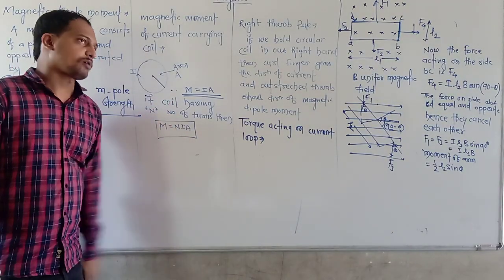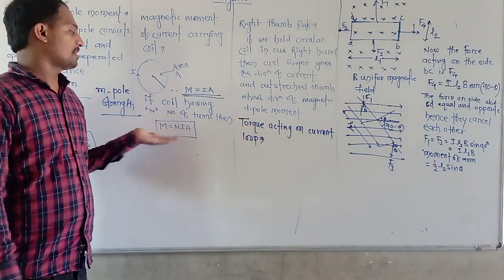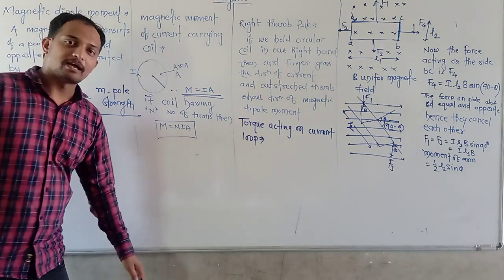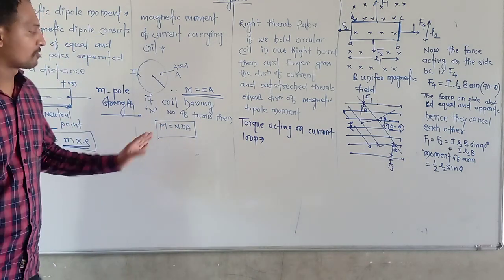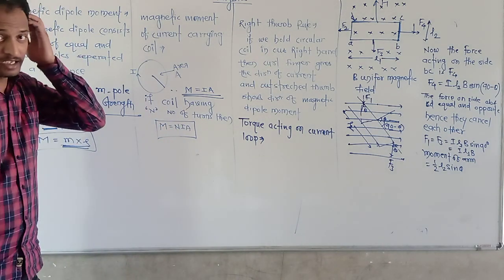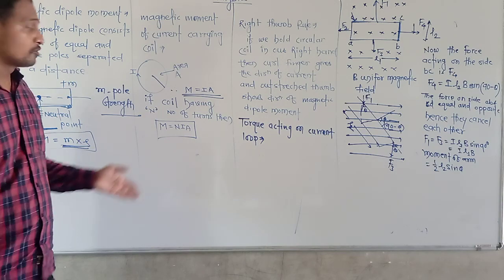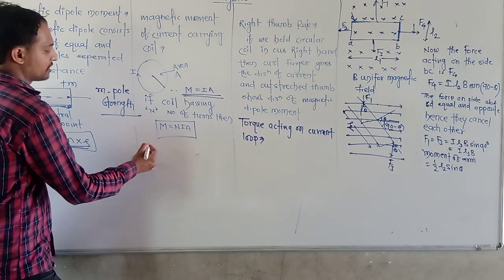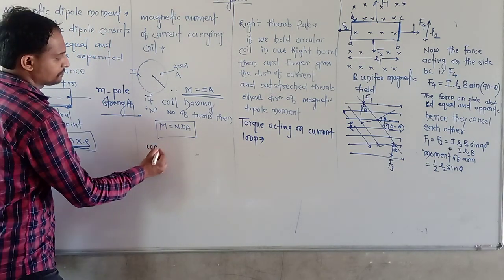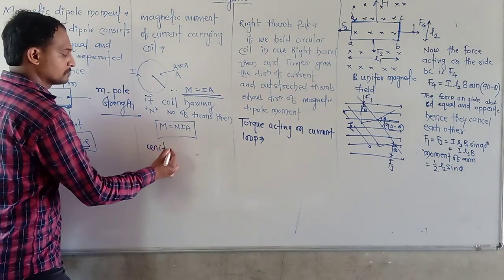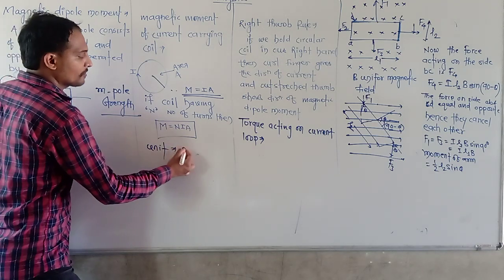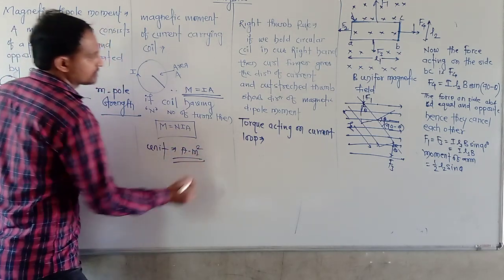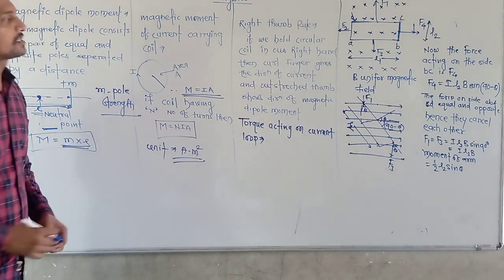If the coil has a number of turns N, then we multiply by N, so the magnetic dipole moment of that coil is M equal to N I A. The unit of this quantity is ampere metre squared, which is the SI unit.